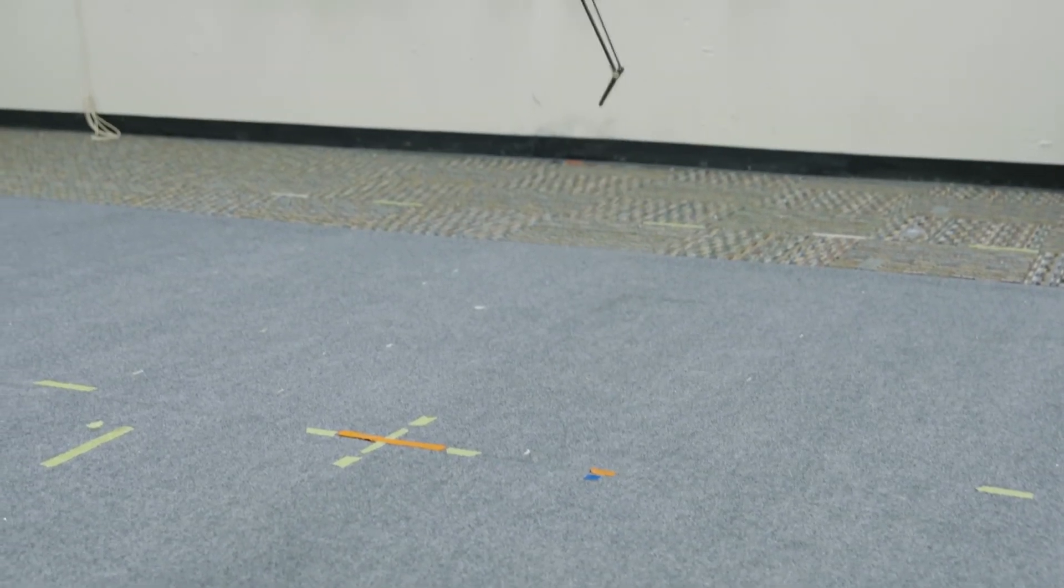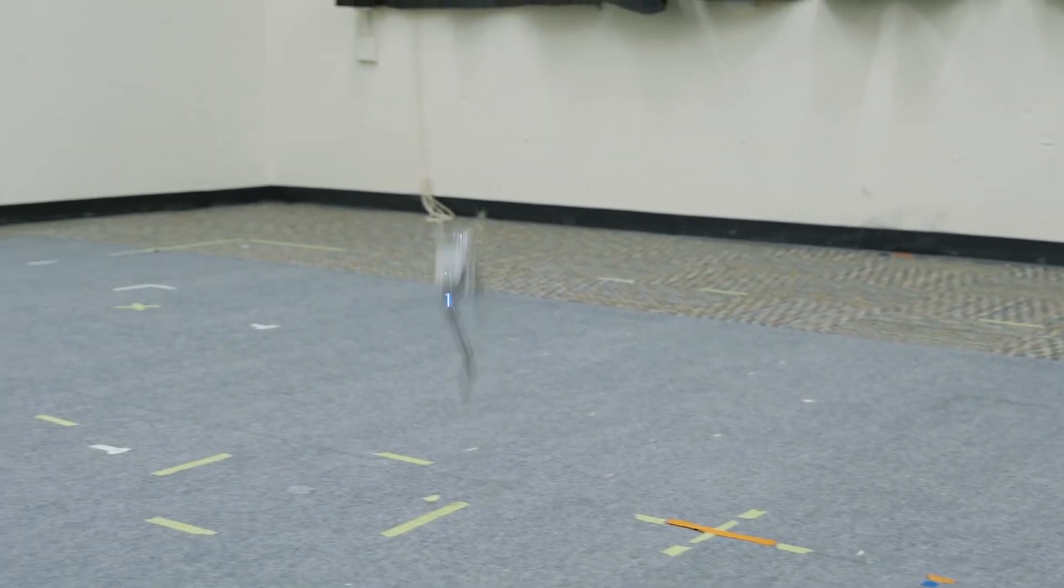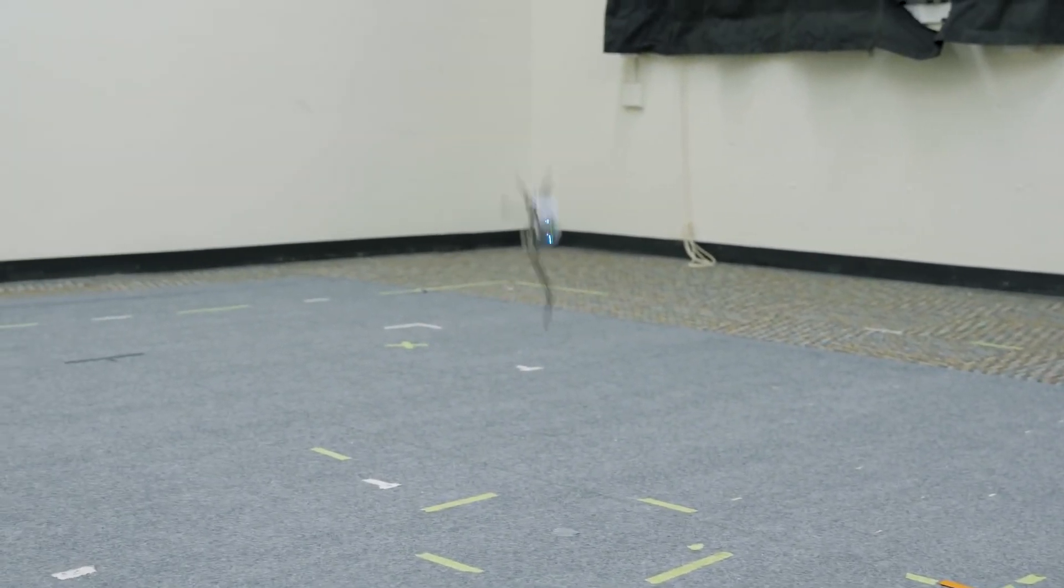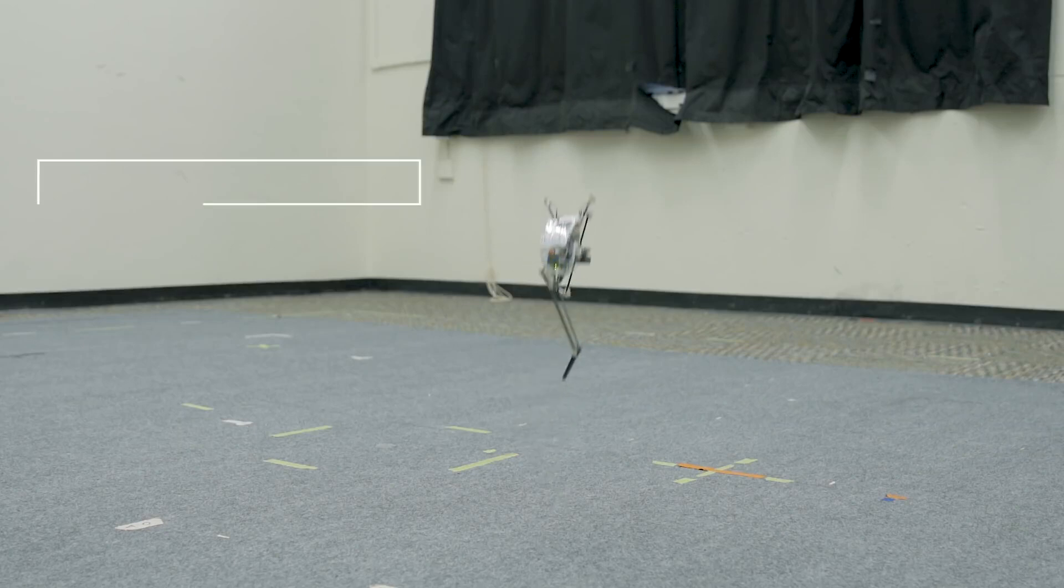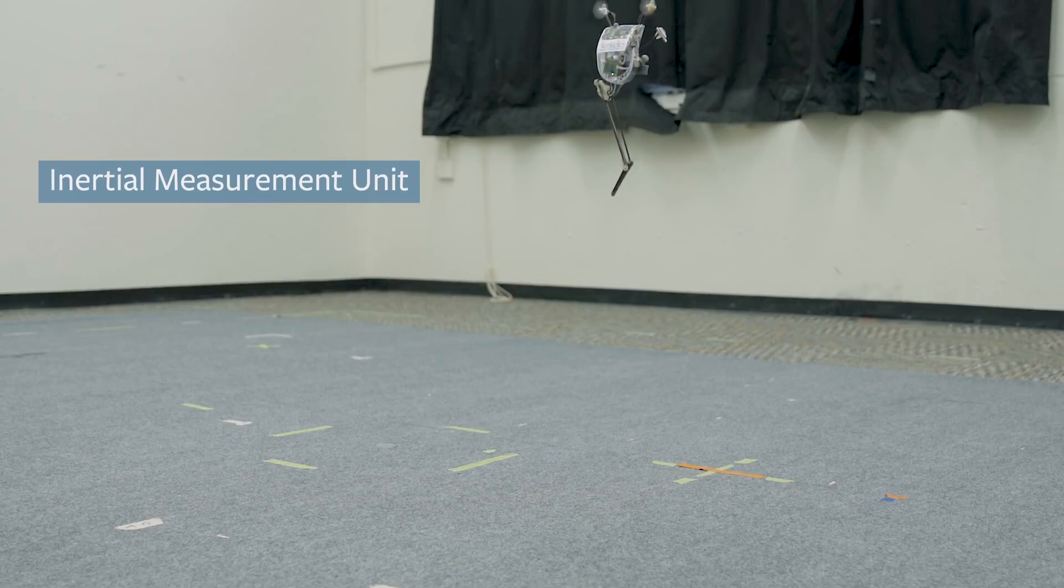Now that Salto can go to a particular spot it needs to know which way it's pointed, and so to do that the robot has to use its onboard inertial measurement unit which kind of works like a human's inner ear. It essentially gives it a sense for which way is up when it's jumping so it doesn't fall over.